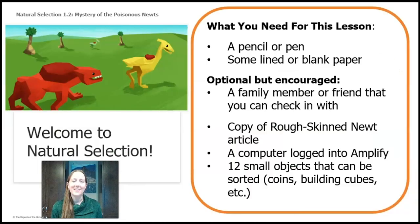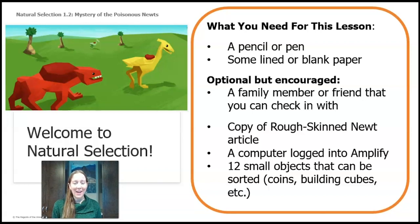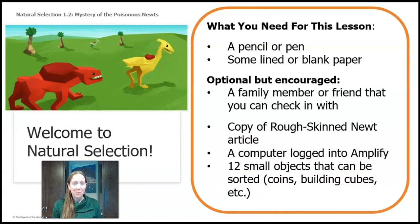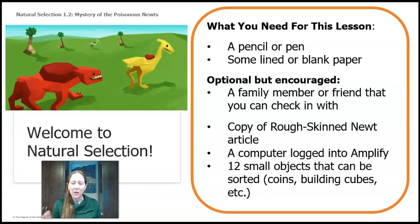What you'll need for this lesson is something to write with and something to write on. Optional materials: if you have someone to check in with — a family member, a friend, or a relative you can text or Snapchat — that's great. If you have a copy of the rough-skinned newt article, if you have a computer to log into Amplify, and for an activity near the end, 12 small objects that can be sorted — coins, building cubes, any small thing that has differences.